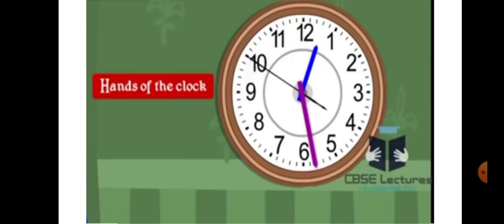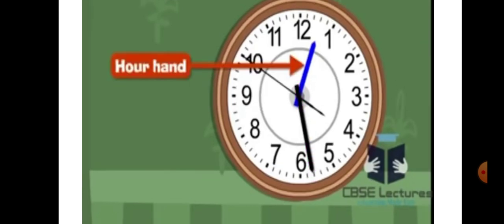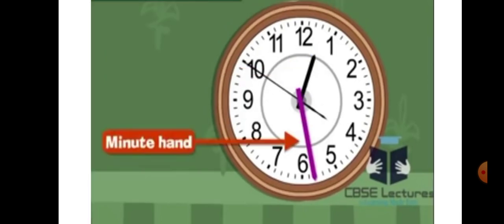Every clock has two thick needles. They are known as the hands of the clock. The shorter one indicates the hour and is called the hour hand. The longer one indicates the minutes and is called the minute hand.